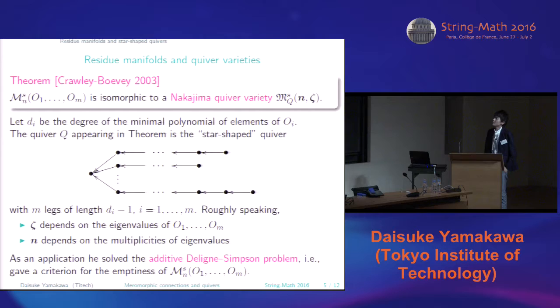So in the Crawley-Boevey theorem, the quiver is like this. So the star-shaped quiver. So here the number of legs is just the number of poles. So in this case, the number of legs is m. And the length is given by the degree of the minimal polynomial of elements of orbit. So precisely, di minus 1, so degree minus 1. So roughly speaking, the complex parameter zeta depends on the eigenvalues. And the border n depends on the multiplicities of the eigenvalues.